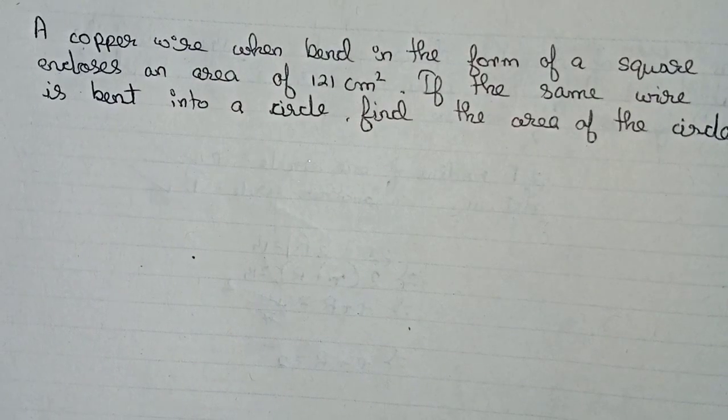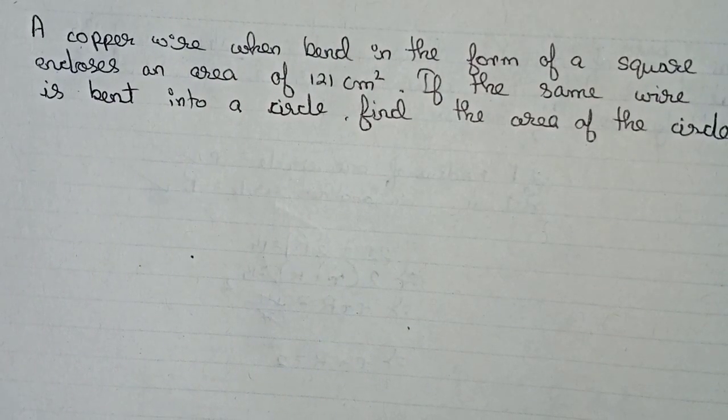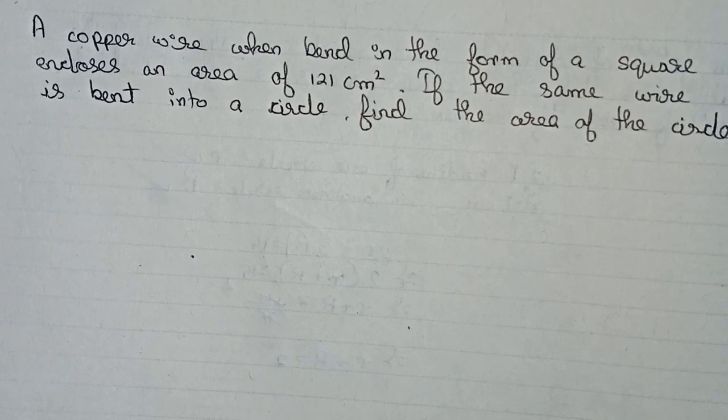Hello guys, welcome to this video. In this video, our question is: a copper wire when bent in the form of a square encloses an area of 121 centimeter square. If the same wire is bent into a circle, find the area of the circle.